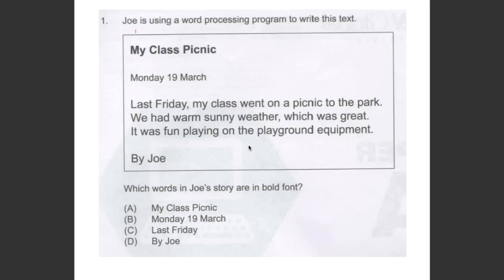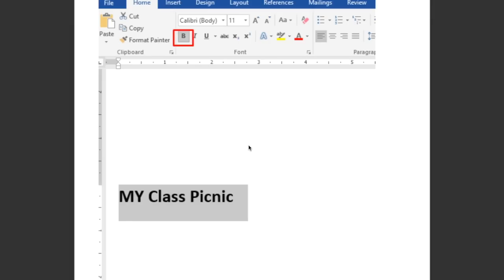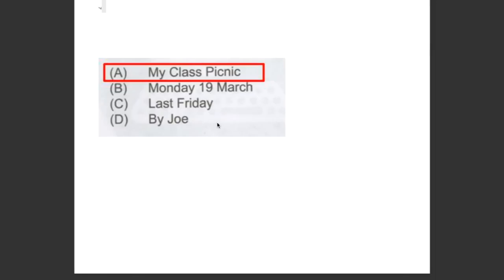This question asked us which words in Joel's story are in bold font. As you can see in the word document, 'My class picnic' is in bold font. So the answer has to be A, My class picnic.